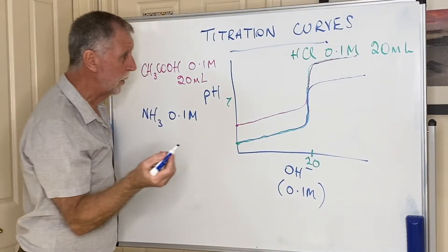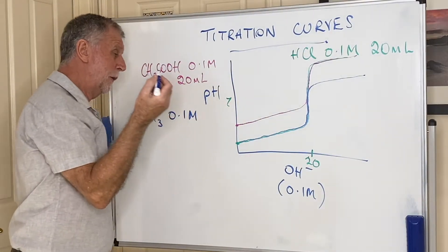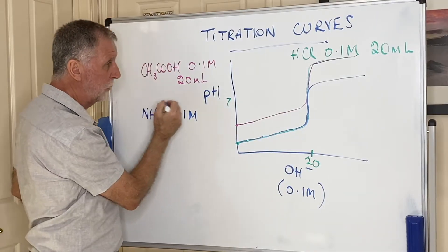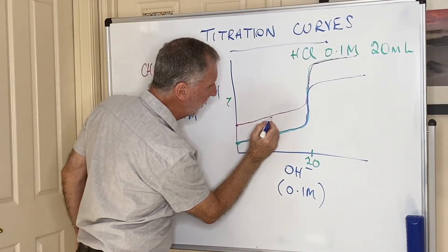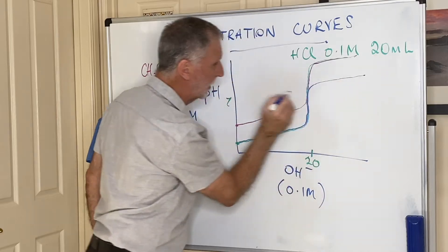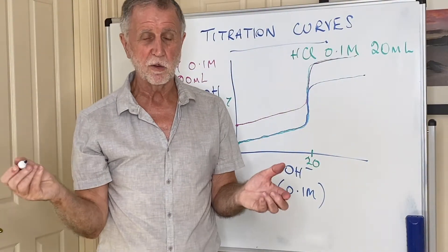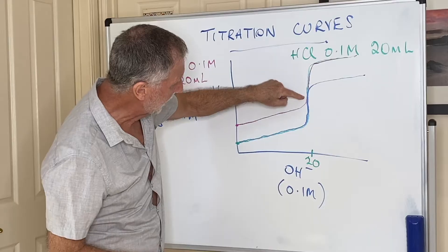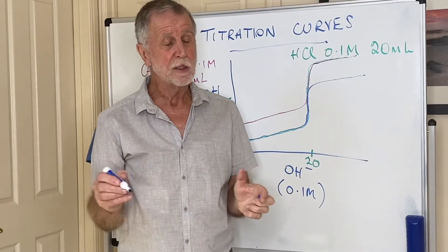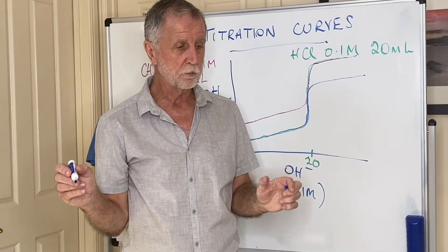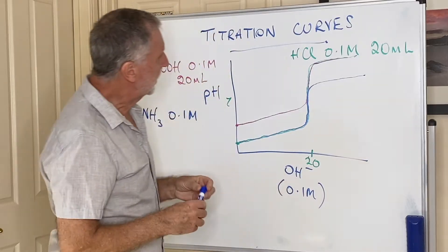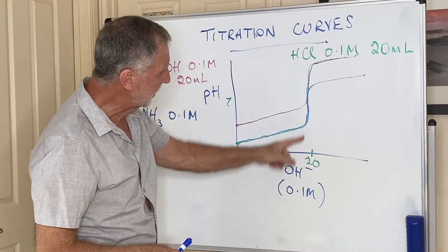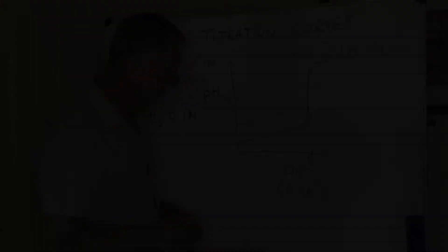Those are the three possible titration curves you're likely to get questions on. The fourth possibility would be the weak base with the weak acid, which would follow a gradual line with virtually no vertical section at all. In reality there wouldn't be any vertical section at all.